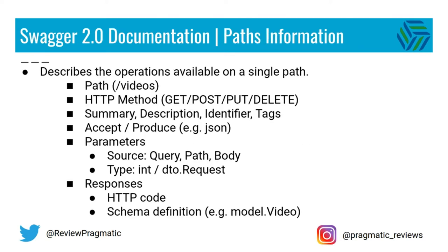As part of the OpenAPI specs we're going to describe the API endpoints. For each endpoint or path we can specify the path, for example slash videos, the HTTP method, for example GET or POST. We can also specify a summary, a description, an identifier, and a list of tags. We can specify the input and output formats, for example JSON, the parameters including the source — which could be the query string, the path, or the body — and the type, which could be an int or an object. Finally we can describe the responses including the HTTP code 200, 400, 500, etc.